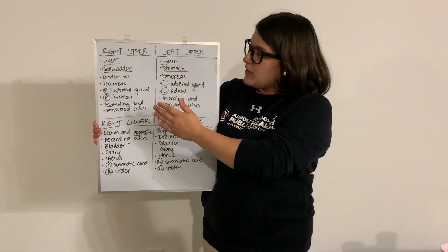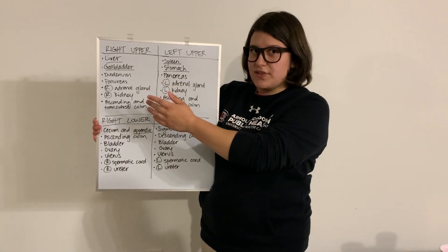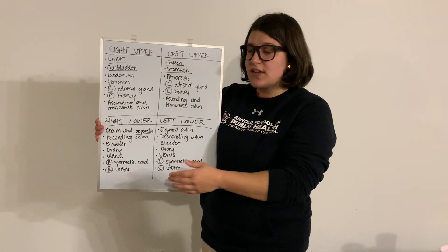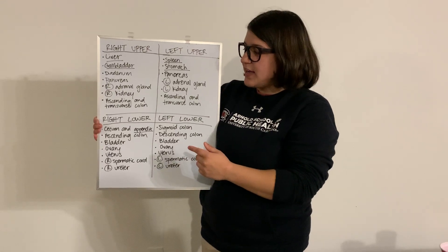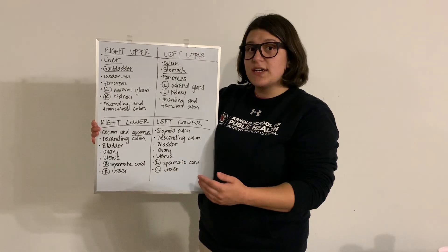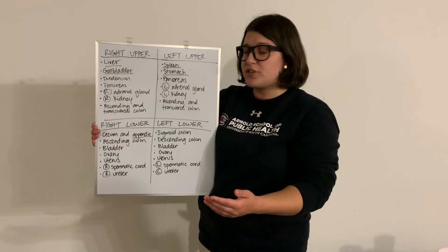In your right upper quadrant we've got the liver, gallbladder as previously mentioned, duodenum, pancreas, right adrenal gland, right kidney, as well as your ascending and transverse colon, or at least a portion of it.